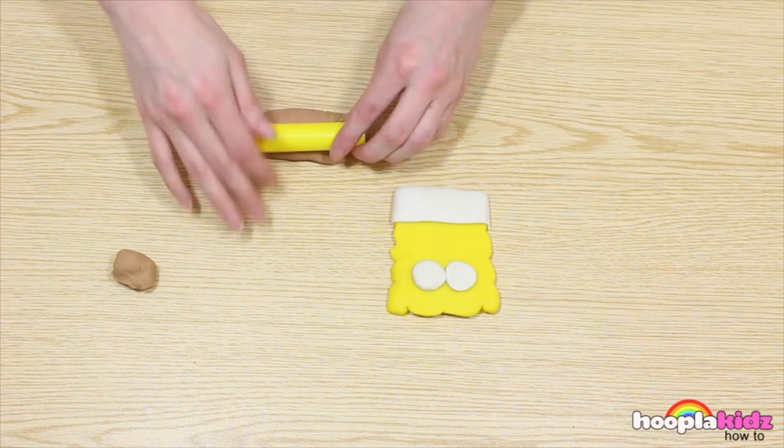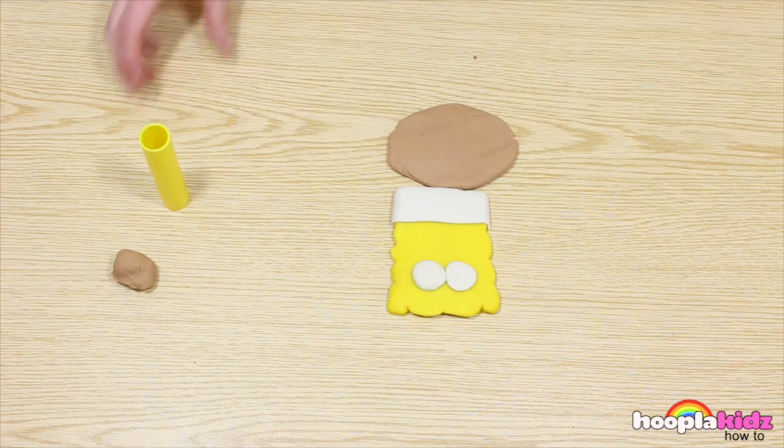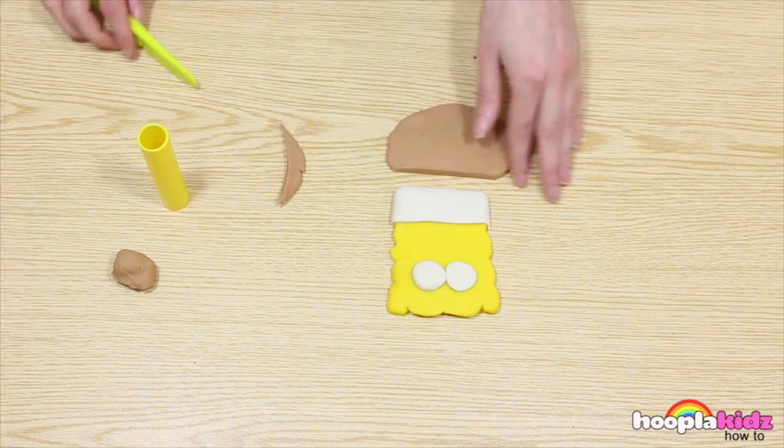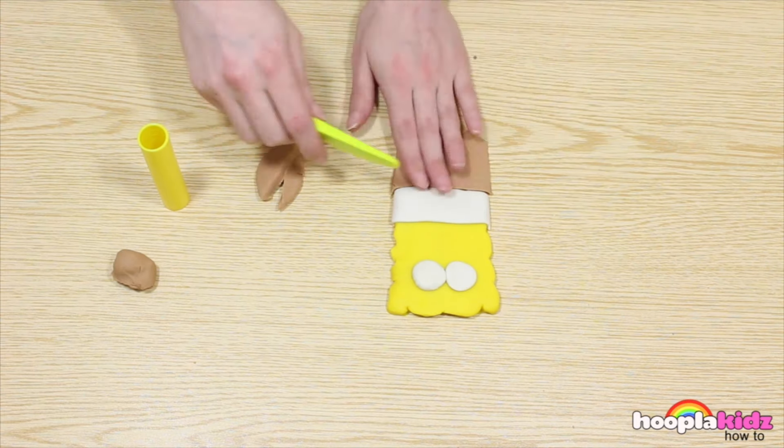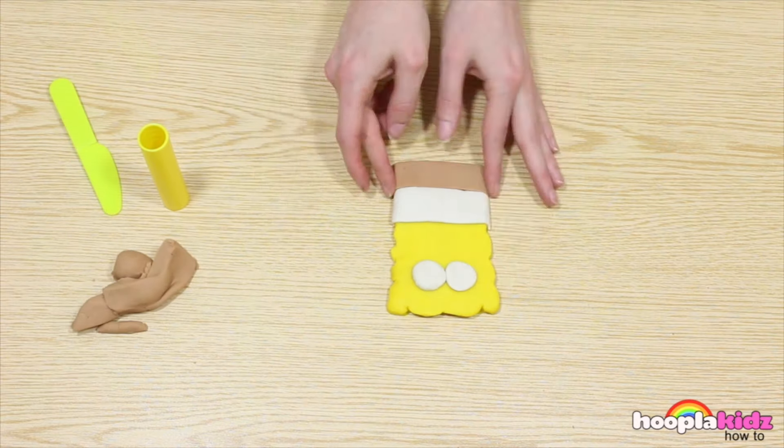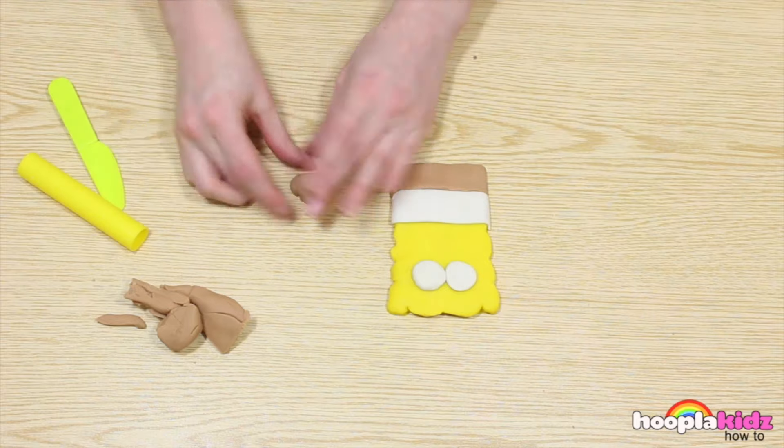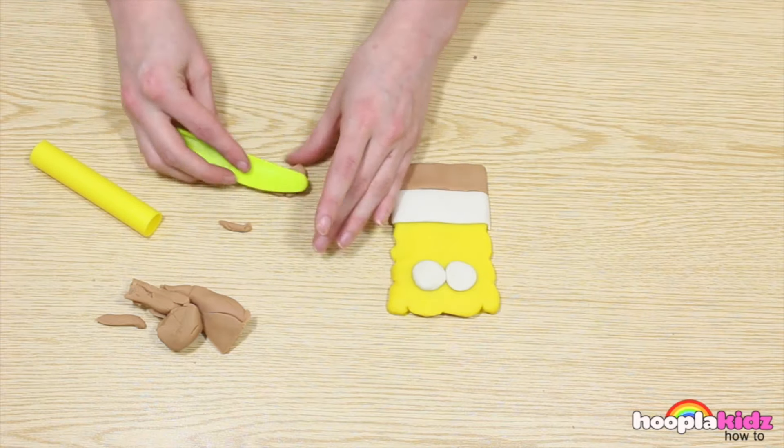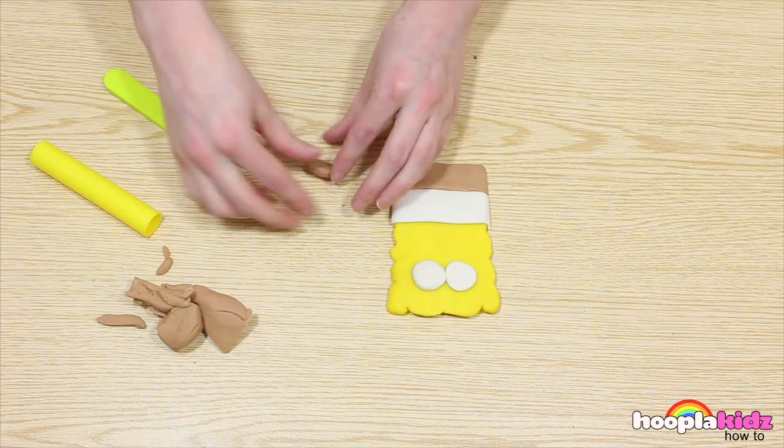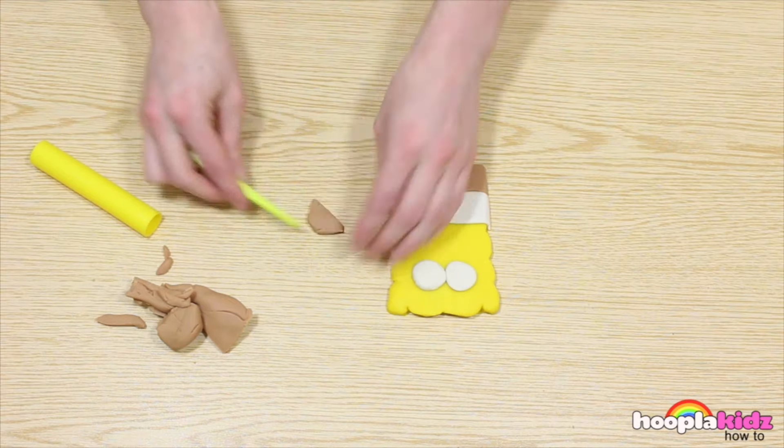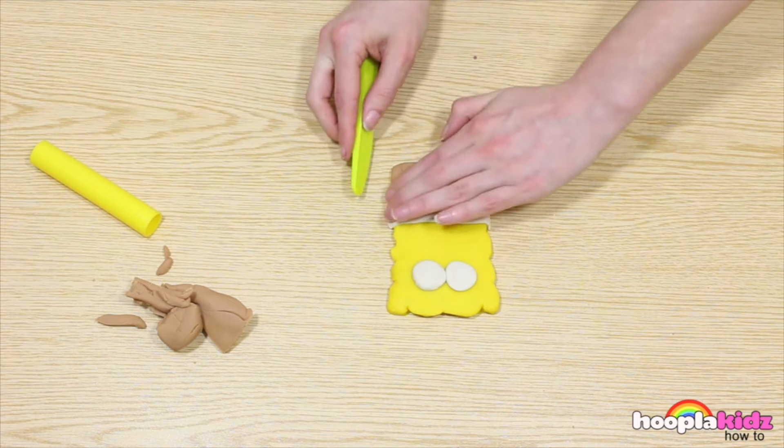We're now going to take the brown Play-Doh and roll it flat. We want to make another thin rectangle shape that sits underneath the white one. These are SpongeBob's shorts. Use some more of the brown Play-Doh to make a sort of triangle shape. These are going to be the legs to his shorts. Attach them at the bottom.